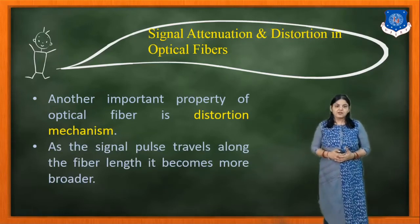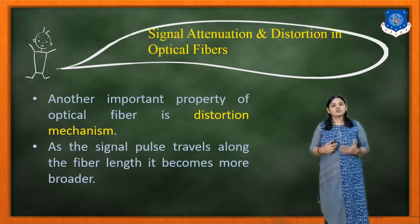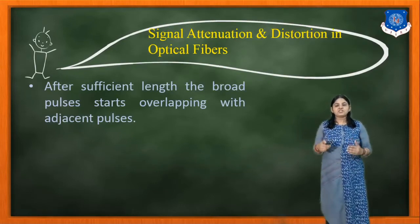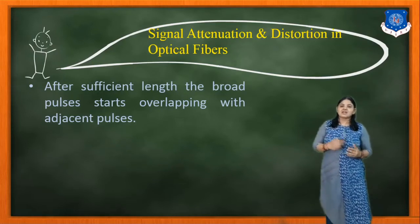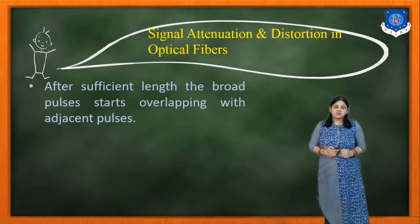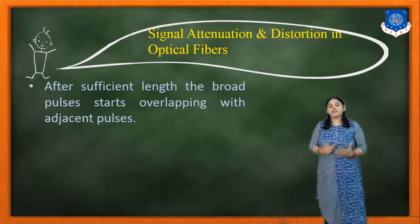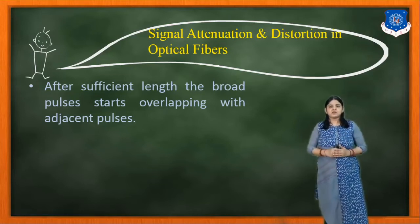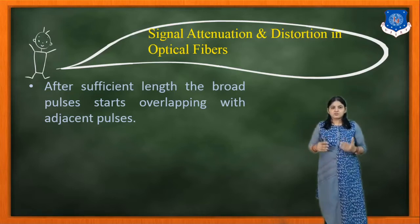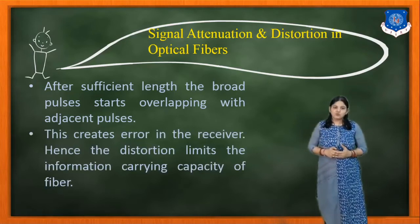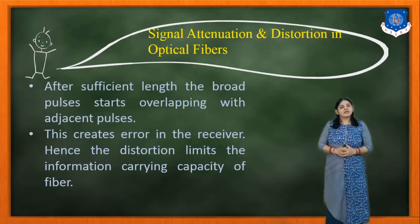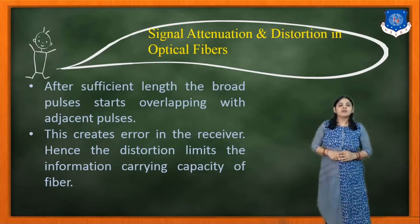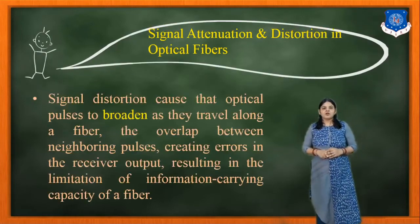Another important property of the fiber is the distortion mechanism. As the signal pulse travels along the fiber length, it becomes broader. After a sufficient length, the broad pulses start overlapping with the adjacent pulses — this is pulse broadening. Initially there is no overlapping between the two pulses, but after some distance it starts overlapping, and this creates errors in the receiver.